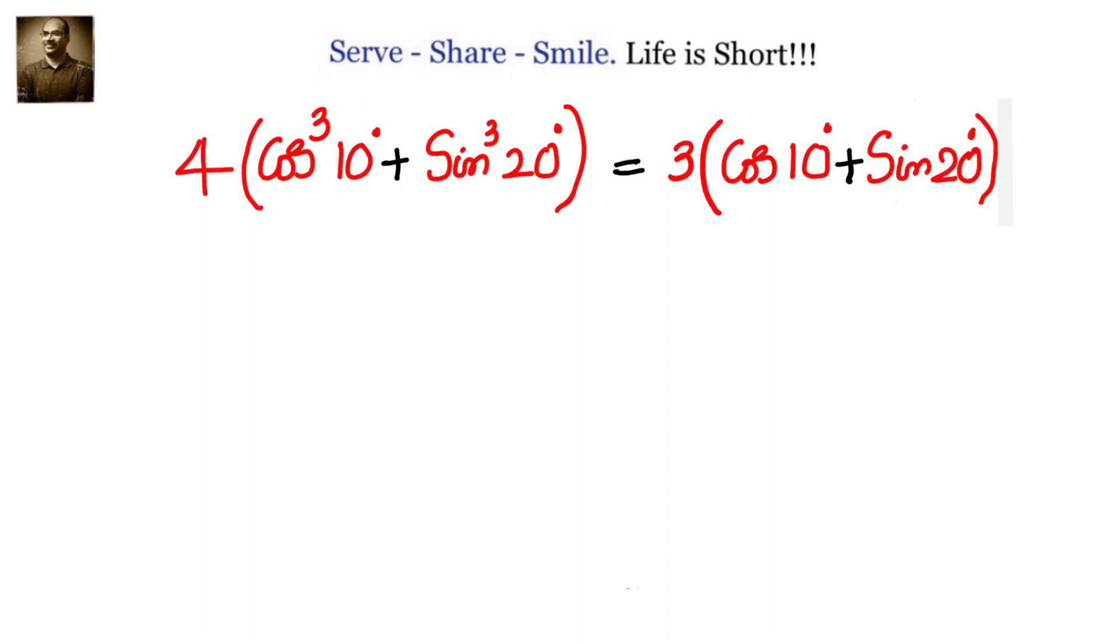We have to prove that 4 into cos cube 10 plus sin cube 20 equals to 3 into cos 10 plus sin 20.